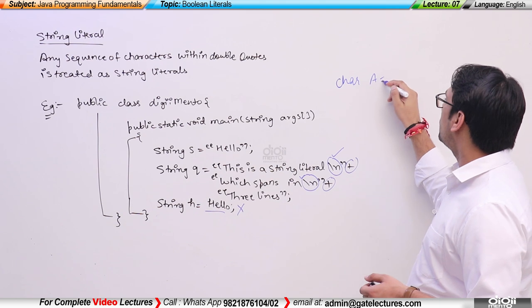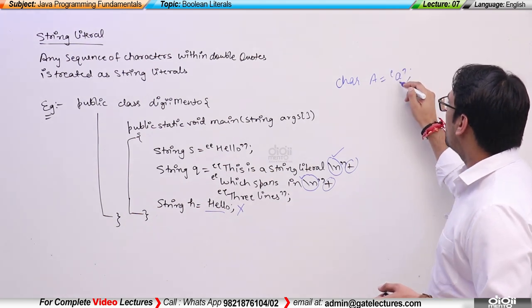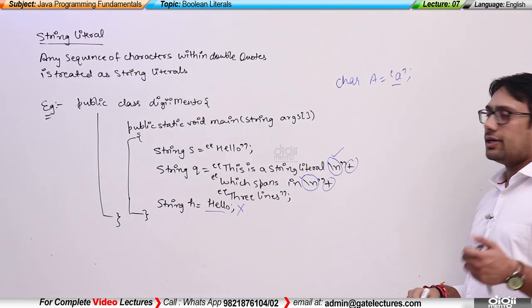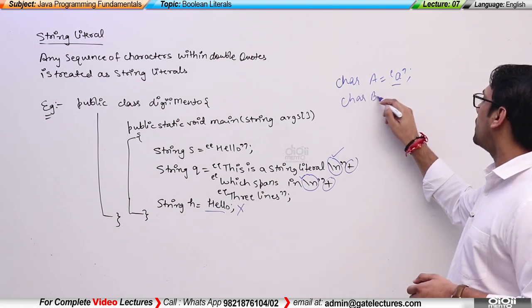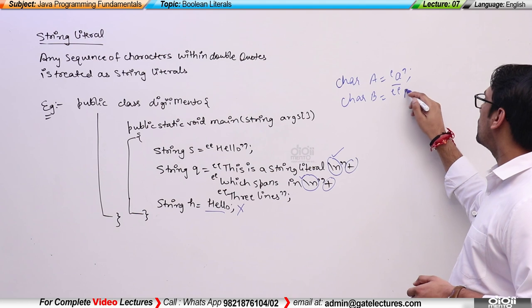Character a is equal to single quotes a. Single quotes a means it is a character, but if I try to say character b is equal to double quotes a,